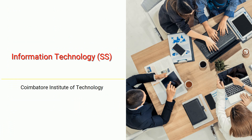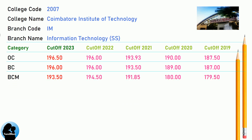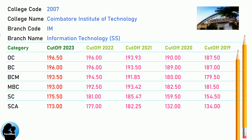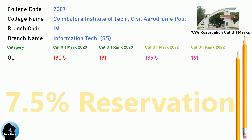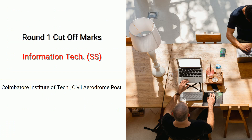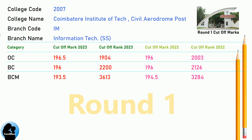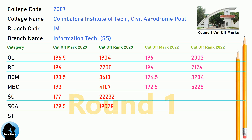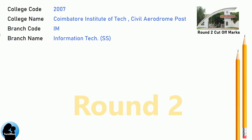DNA Cut-Off for Coimbatore Institute of Technology in Information Technology, SS. DNA 7.5 Reservation Cut-Off for Coimbatore Institute of Technology in Information Technology, SS. DNA Round 1 Cut-Off for Coimbatore Institute of Technology in Information Technology, SS. DNA Round 2 Cut-Off for Coimbatore Institute of Technology in Information Technology, SS.